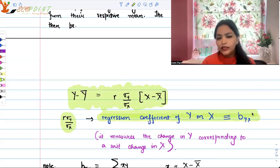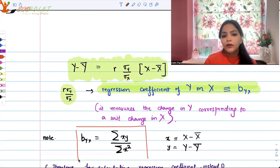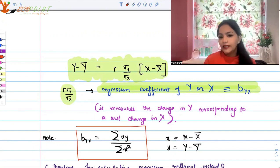Now what is this? r times sigma y upon sigma x is called the regression coefficient of y on x and we denote it as b_yx. Keep in mind that the analogous formula will be for x on y. Of course, if there is a regression line which is y on x, then you have x on y as well. What it does is basically it measures the change in y corresponding to a unit change in x.